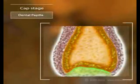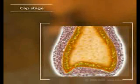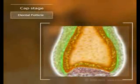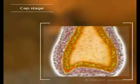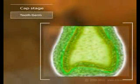The condensed mesenchymal cells will form the dentin and the pulp, and they are called the dental papilla. The dental follicle will develop from the remaining condensed mesenchyme, and all of these cells together are known as the tooth germ.